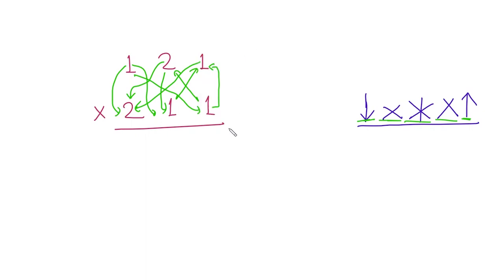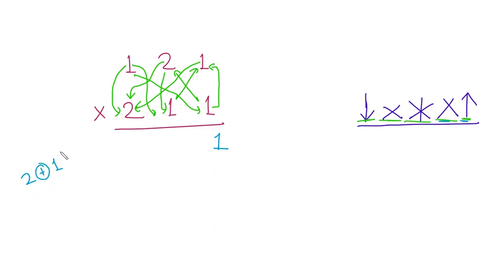Coming to the first step, we have an up arrow which means multiply this number by this one — so 1 multiplied by 1 is 1, we write 1. Then for the next step, we multiply this by this and this by this: 1 multiplied by 2 is 2, and 1 multiplied by 1 is 1. Don't forget you also have to add these numbers, so 2 plus 1 is 3, we write 3.